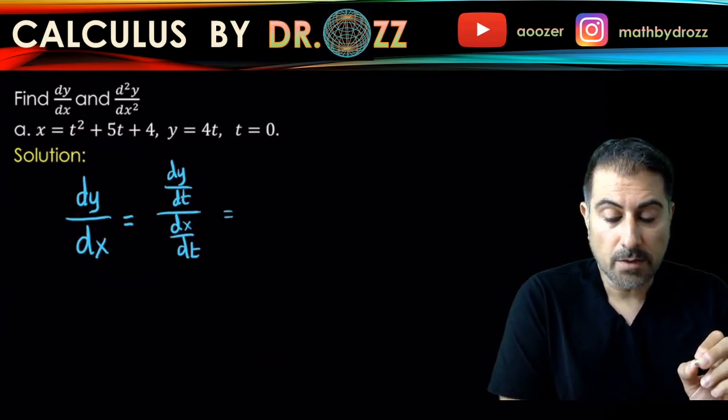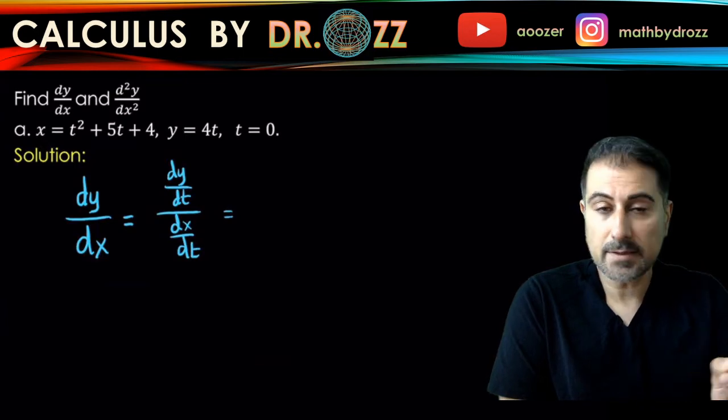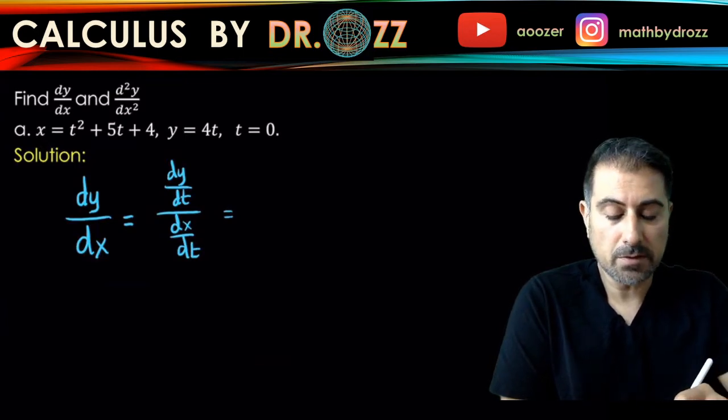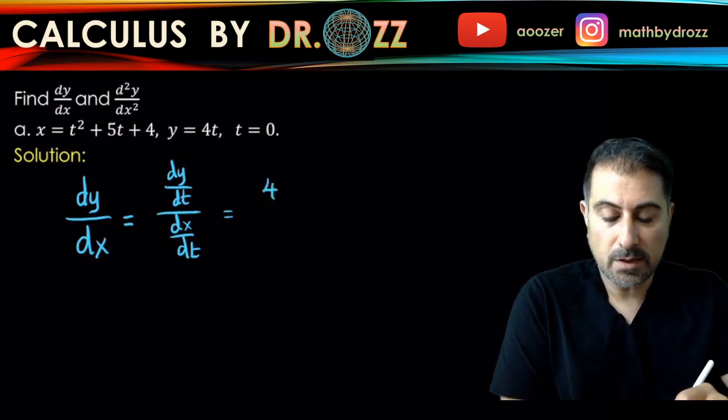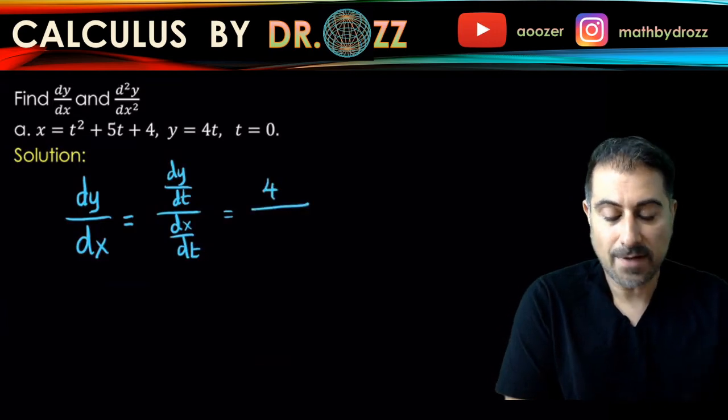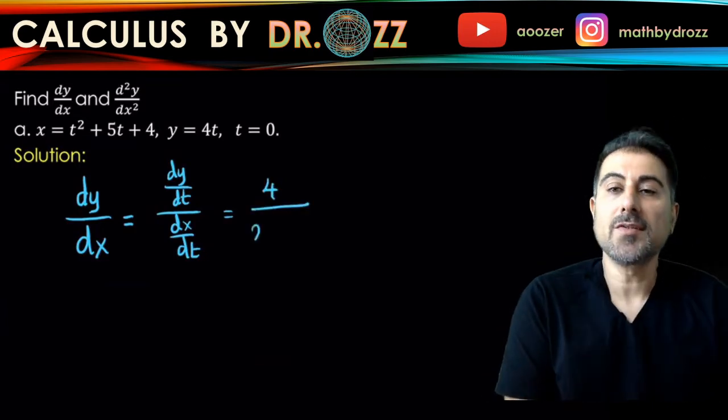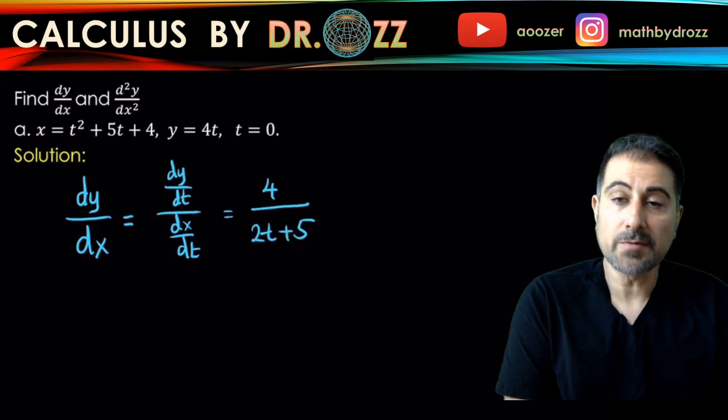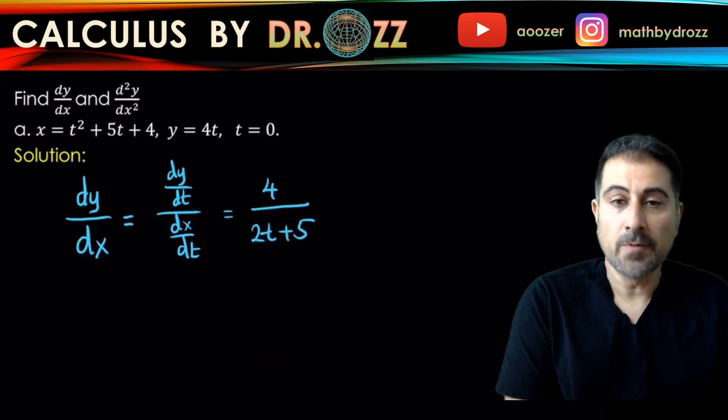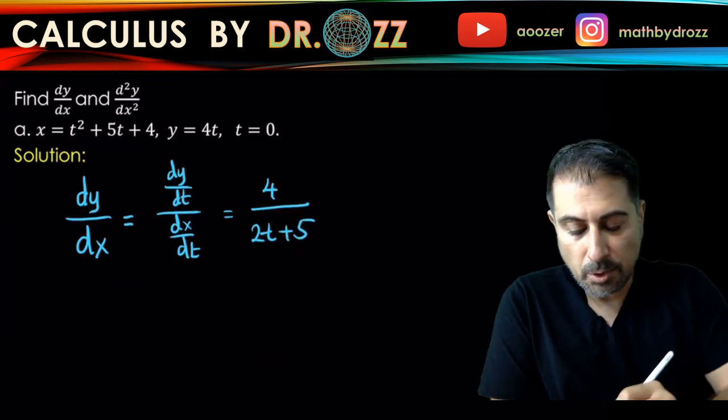So once we have this set up, we can find dy over dt and dx over dt, because y and x are both functions of t, the parameter. So dy over dt equals 4, that's just the derivative of y with respect to t. And dx over dt equals 2t plus 5. So this is the dy over dx, the first derivative of the function with the parameter t.